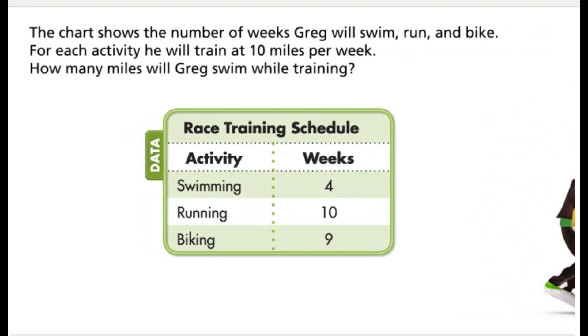The chart shows the number of weeks Greg will swim, run, and bike. For each activity, he will train at 10 miles per week. How many miles will Greg swim while training?